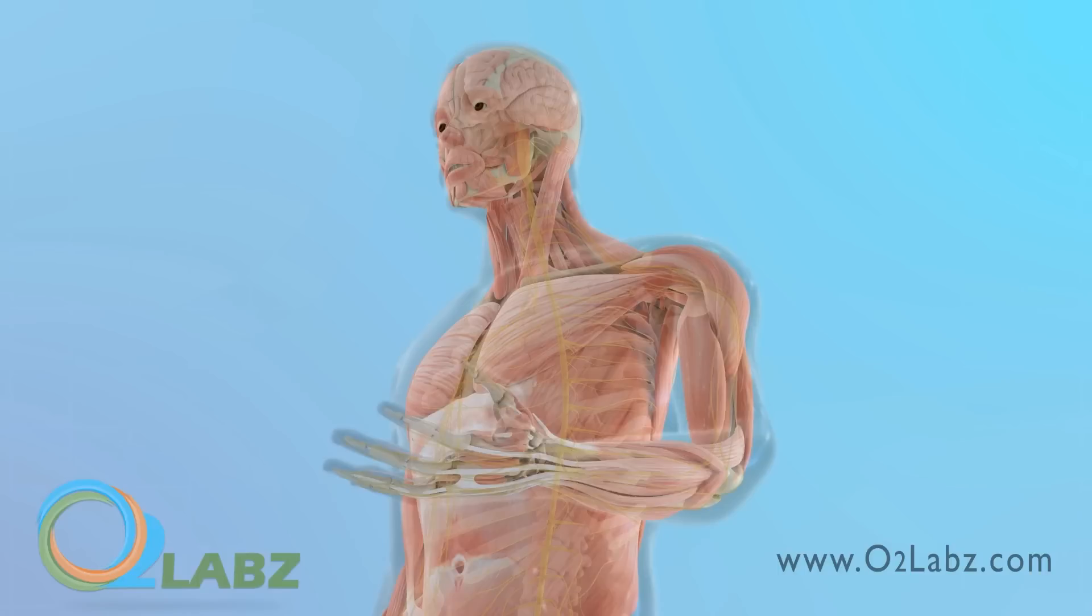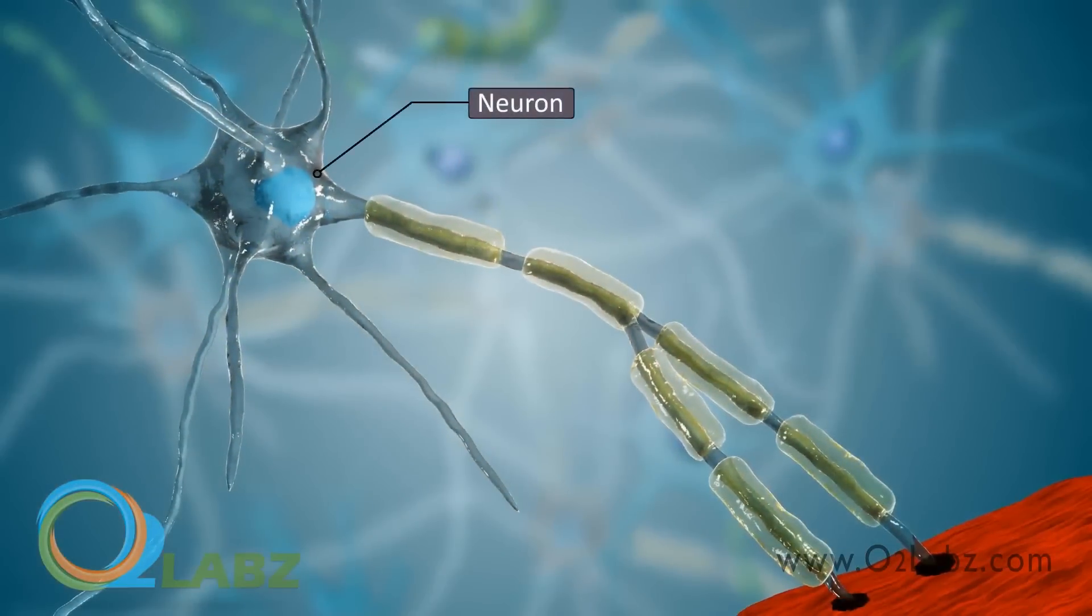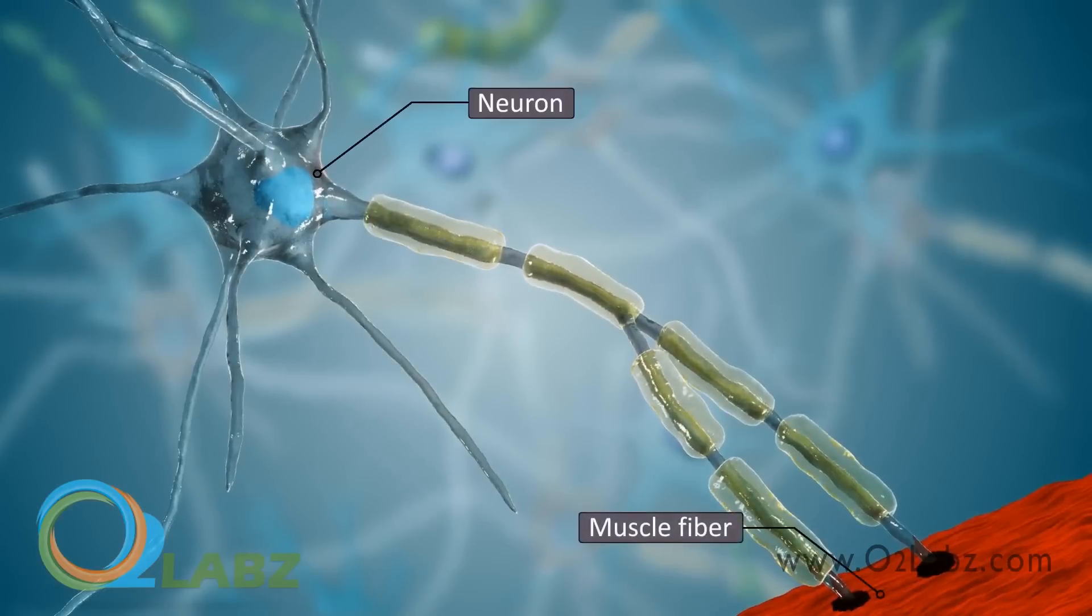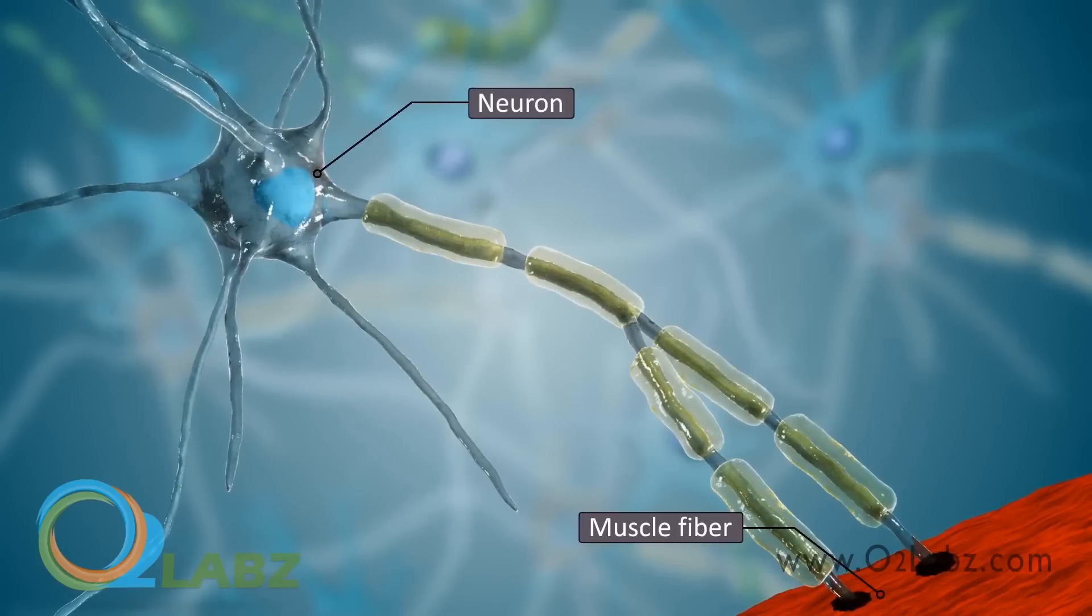An alteration in the electrical potential surrounding the cell membrane causes a neuron to produce a nerve impulse or triggers muscle fibers to contract. Neurons and muscle fibers are referred to as excitable cells.